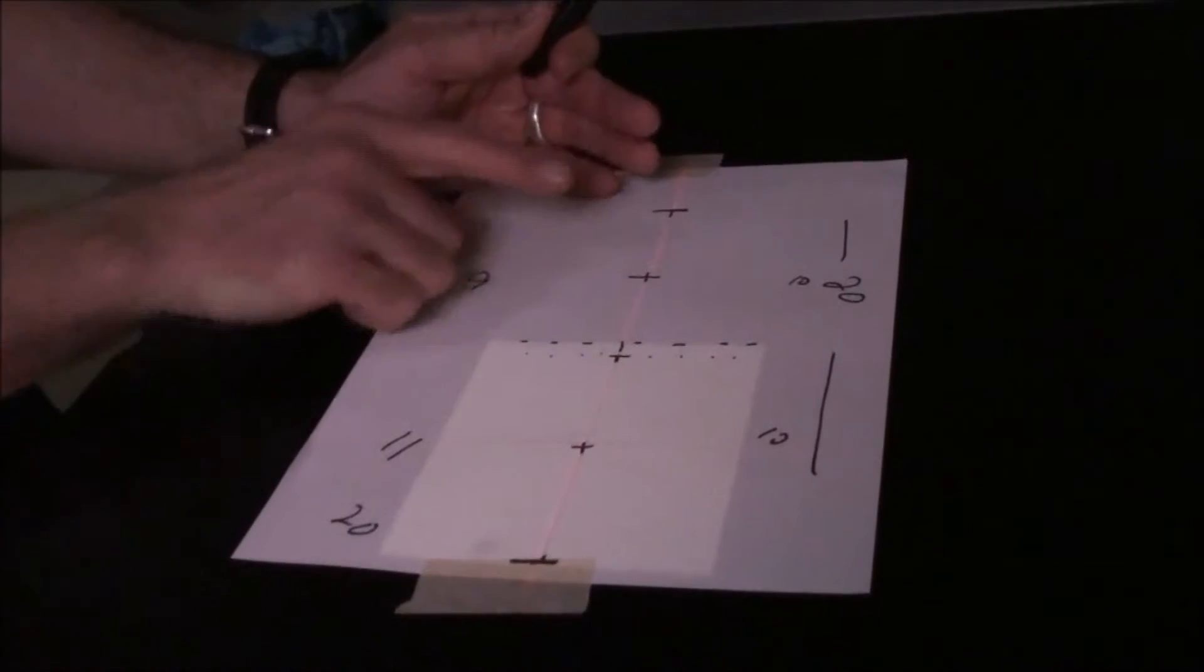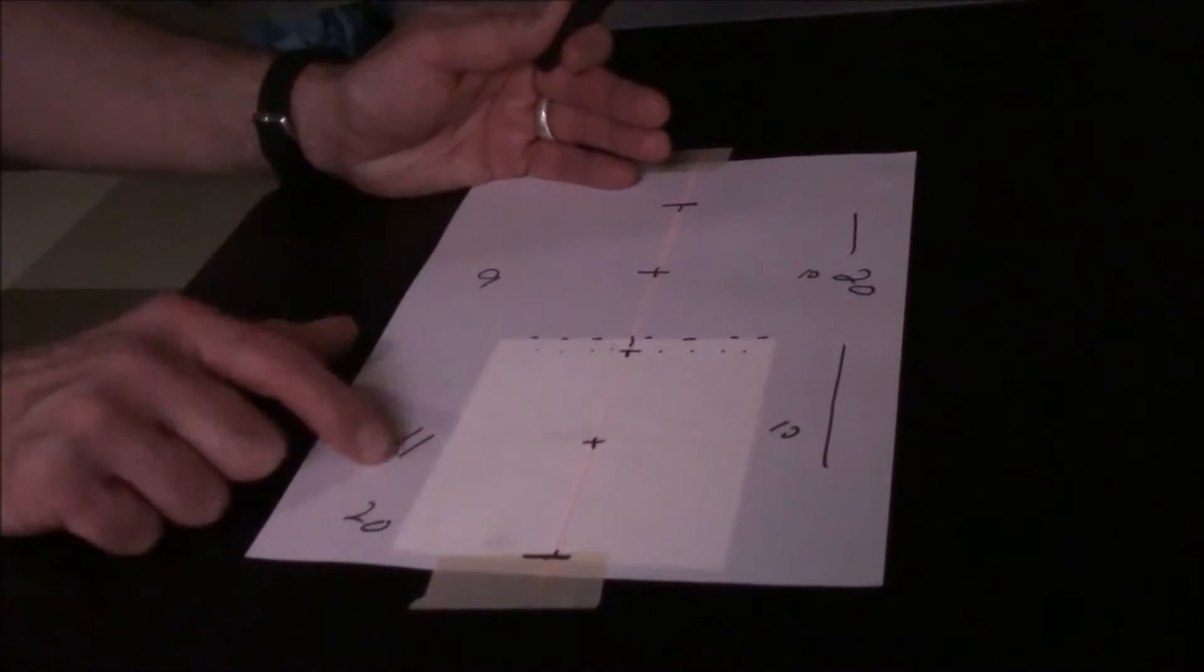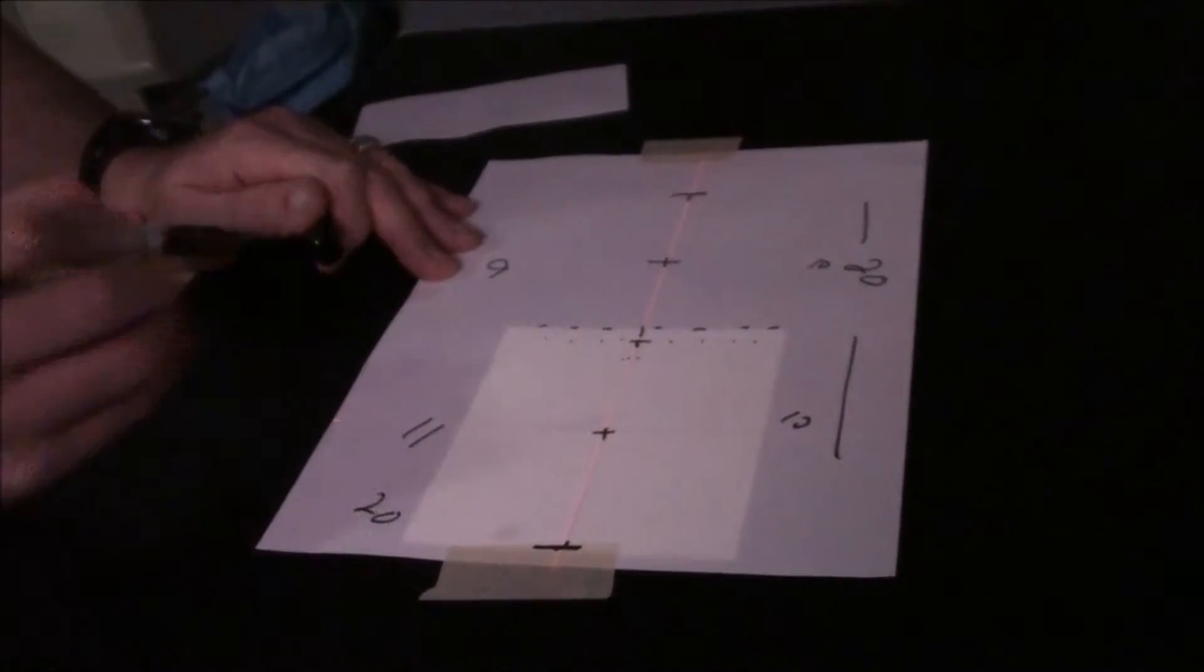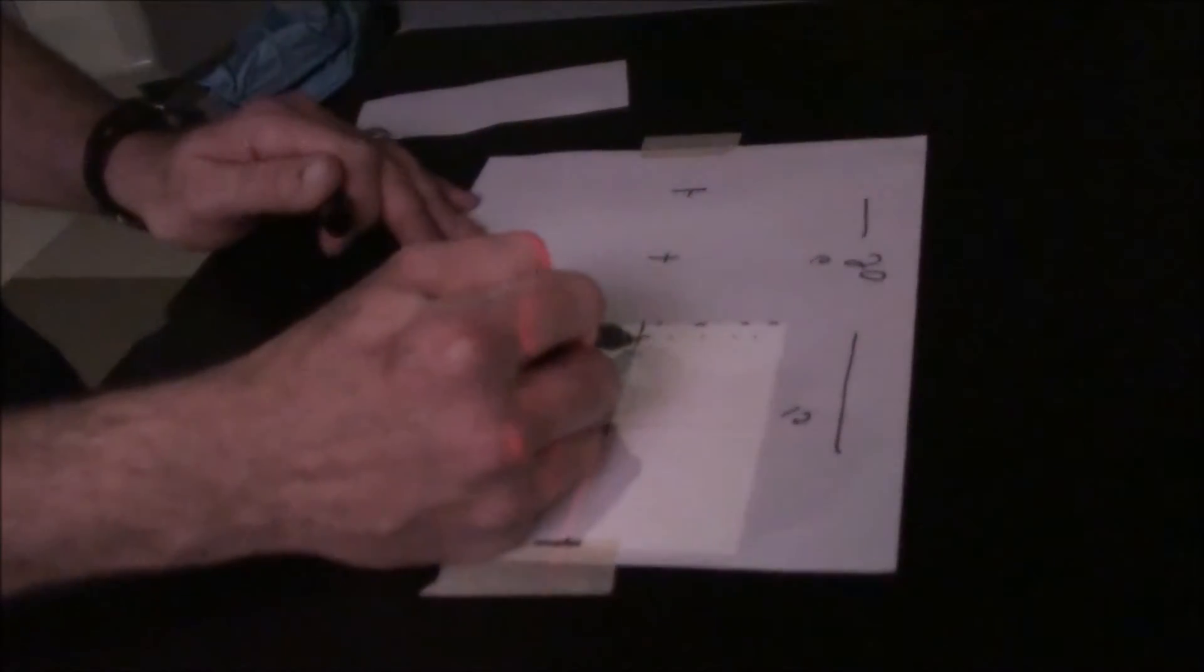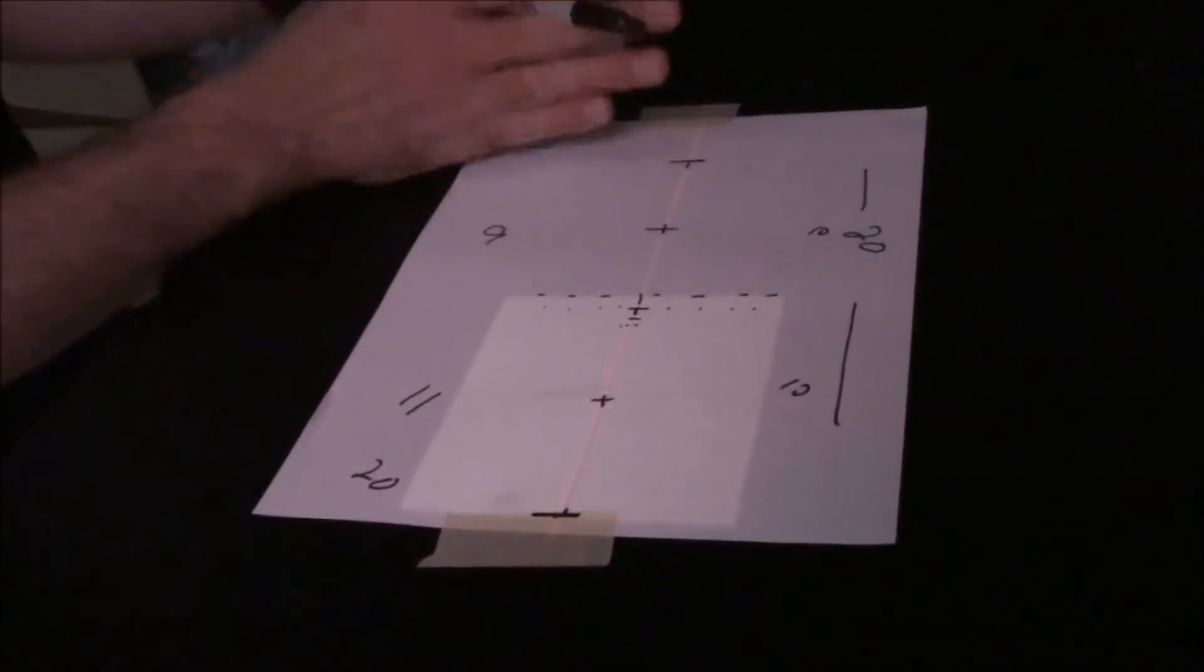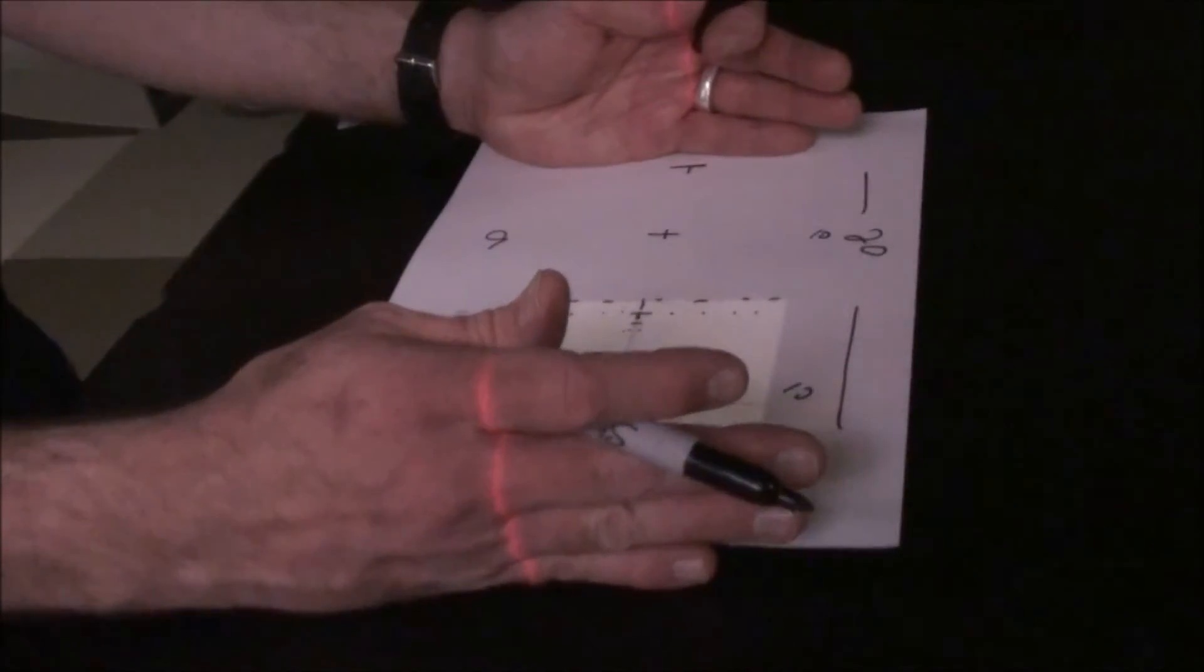So no matter what you do, we can flip-flop these to where this one becomes 11 and this one becomes 9, and that will put us down here. When we move the field size itself, it's only going to put it to right there. We'll have to do field size and table shift in order to maintain the superior and inferior border.